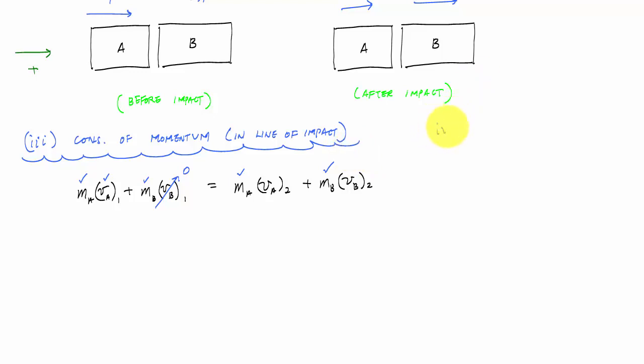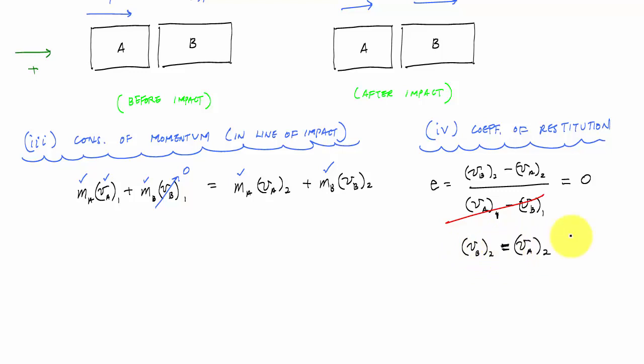The other relationship will come from restitution. So now we're going to apply the coefficient of restitution. Relative velocities after impact divided by the relative velocities before impact: v_B2 minus v_A2 divided by v_A1 minus v_B1, and this equals zero in this case. So that means everything in the denominator just goes bye-bye. This equation just tells me that v_B2 equals v_A2. And you plug that into the conservation of momentum because the two particles are stuck together.